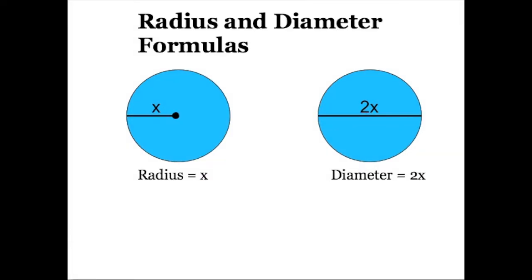Based on the definitions of the radius and diameter that we just looked at, we can write out some simple formulas to help us with any calculations. I'm going to write the radius as a lowercase r and the diameter as a capital D. Let's start with the formula for the diameter: since the diameter is twice the length of the radius, we can say that D is equal to 2r.